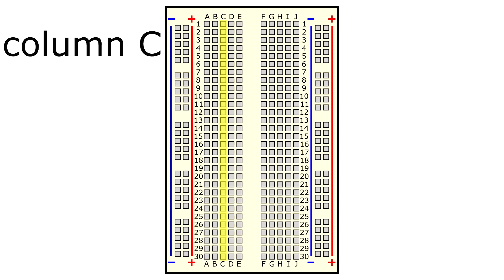For example, all of these holes are in column C, and all of these holes are in row 12. Hole C12 is where column C intersects row 12.